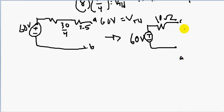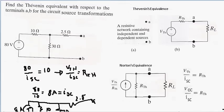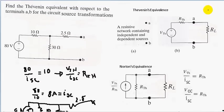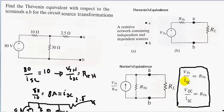Thevenin's equivalent — terminals A and B — is our voltage source in series with a resistor. So our final answer is a 60 volt voltage source in series with a 10 ohm resistor. And that is source transformation: simply transforming part of our circuit from Thevenin's equivalent to Norton's equivalent using the formula V Thevenin's over I short circuit equals R Thevenin's, or equivalently V open circuit over I short circuit equals R Thevenin's. The easiest way to remember this is V equals IR. Thank you for watching.